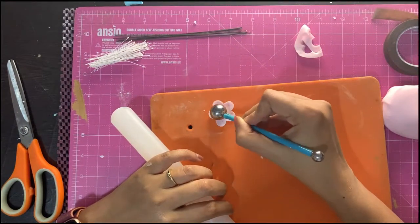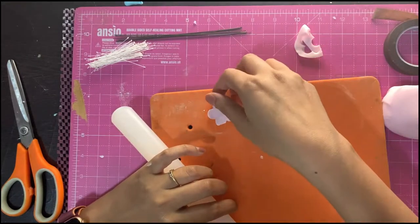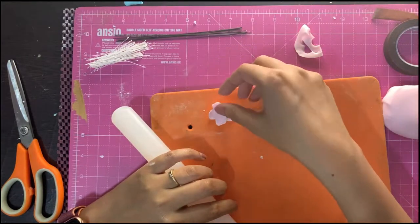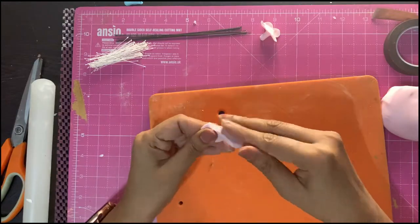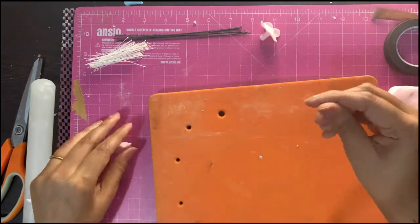Place tapering end in the same hole again and using a ball tool, just spread the petals a little bit. Just thin them out. Here you have one flower ready.